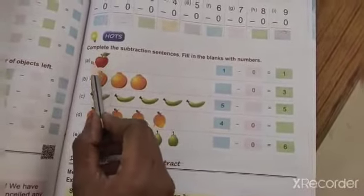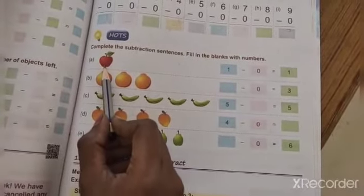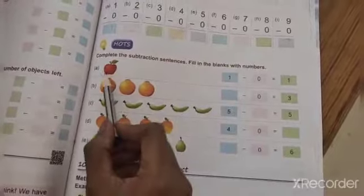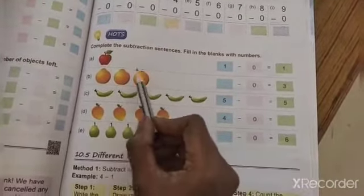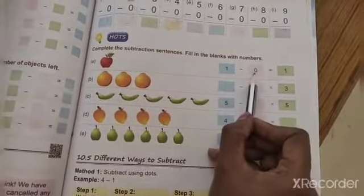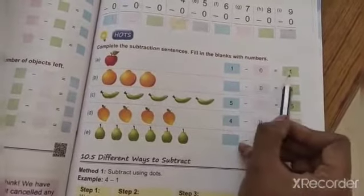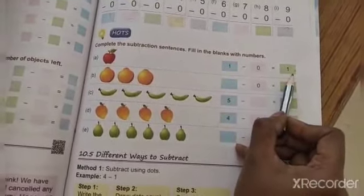Here is how many apples? Only 1 apple. We strike out any apple here? No. So if we not strike out any apples means we write 0. So answer is 1.